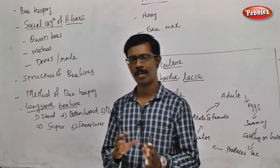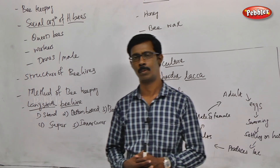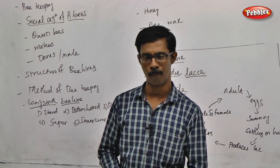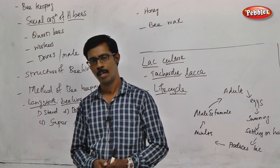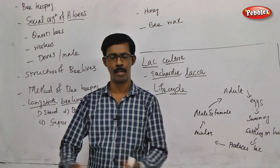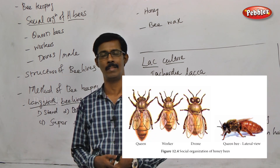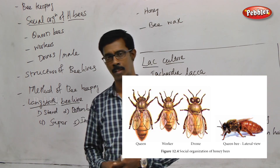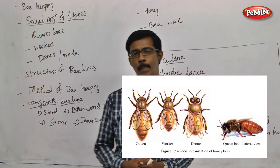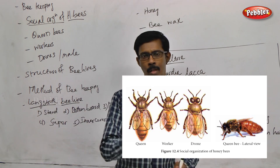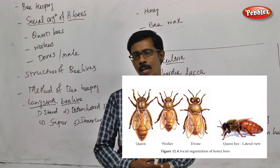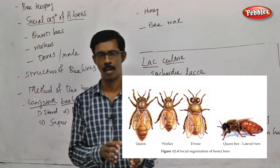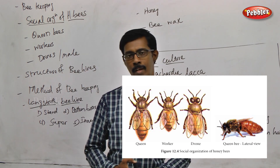First of all, we have a general idea about how to do honeybees. In a beehive, we will see two types of honeybees. One is the queen bee. There is one queen bee in a hive. There is also royal jelly in a beehive.